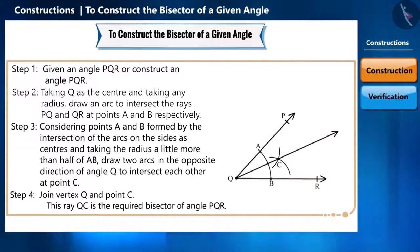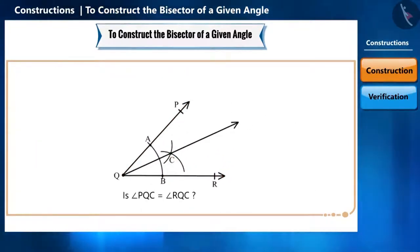But through this construction, did the bisection of angle PQR actually happen? In other words, will angle PQC and angle RQC be equal? Let us see the proof for this. First, let us join AC and BC as shown.